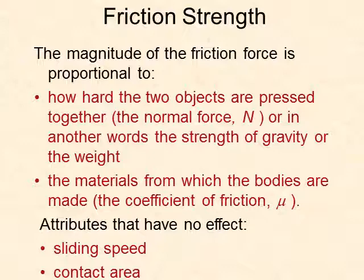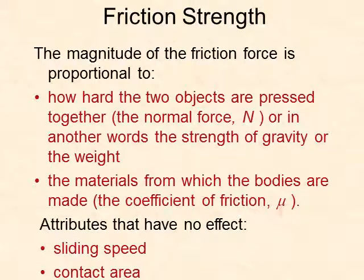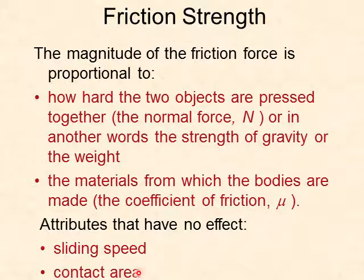Other things that affect the strength of the force of friction include what the material is made of — whether that material is glass, concrete, steel, or plastic. We measure the amount of friction related to a particular material using something called the coefficient of friction, which uses the symbol mu (μ). This is a number, usually a decimal less than one, that gives us an idea of how rough or smooth a surface is and therefore how much friction will be produced. Attributes that have no effect on friction include the contact area and the speed — whether you slide something fast or slow, it should be the same amount of friction.